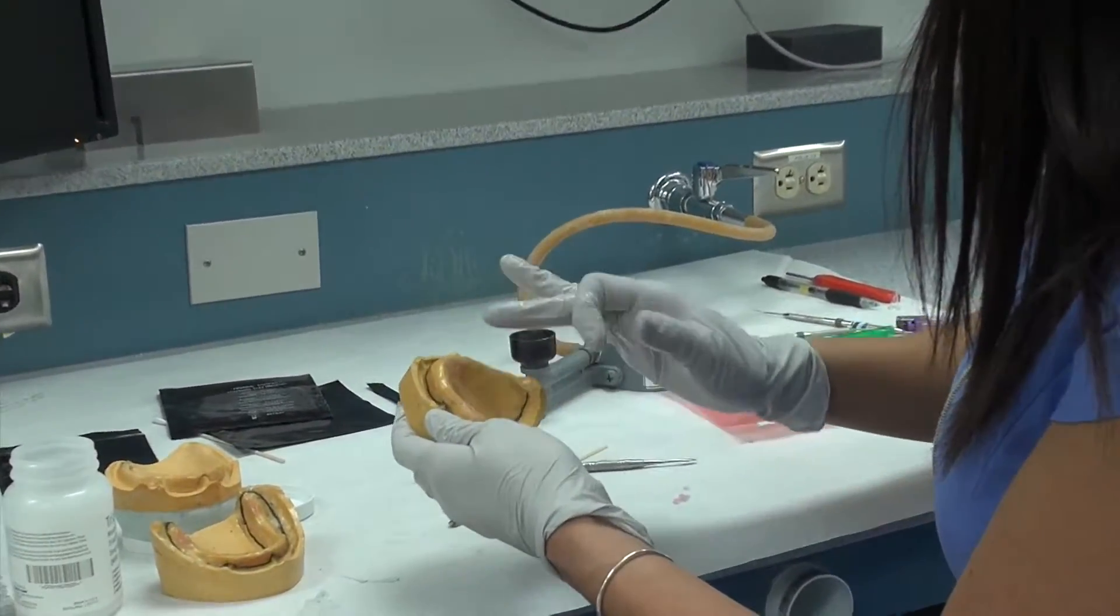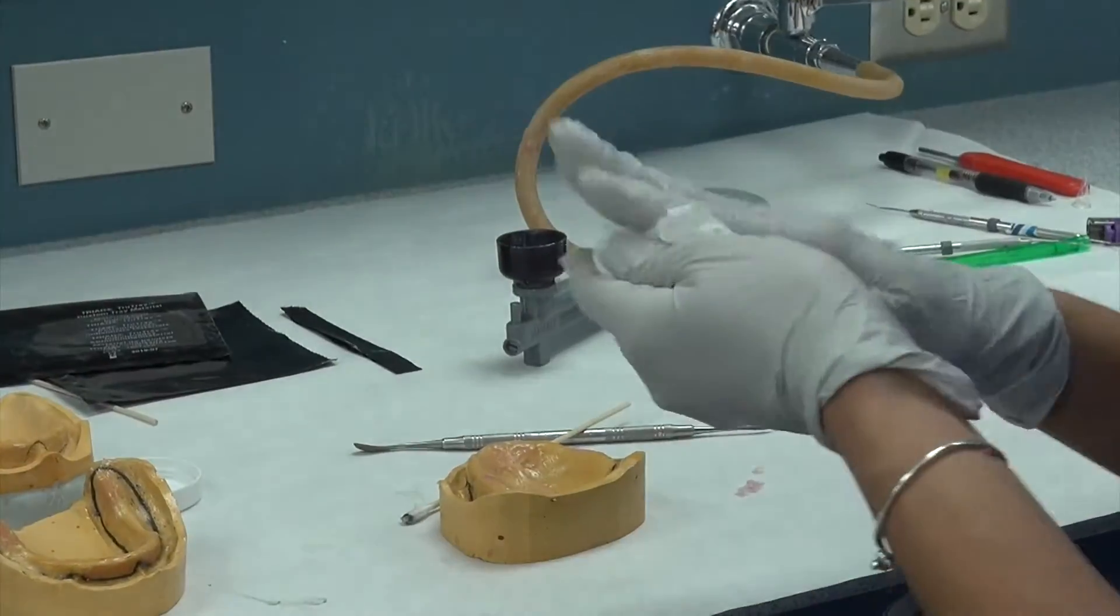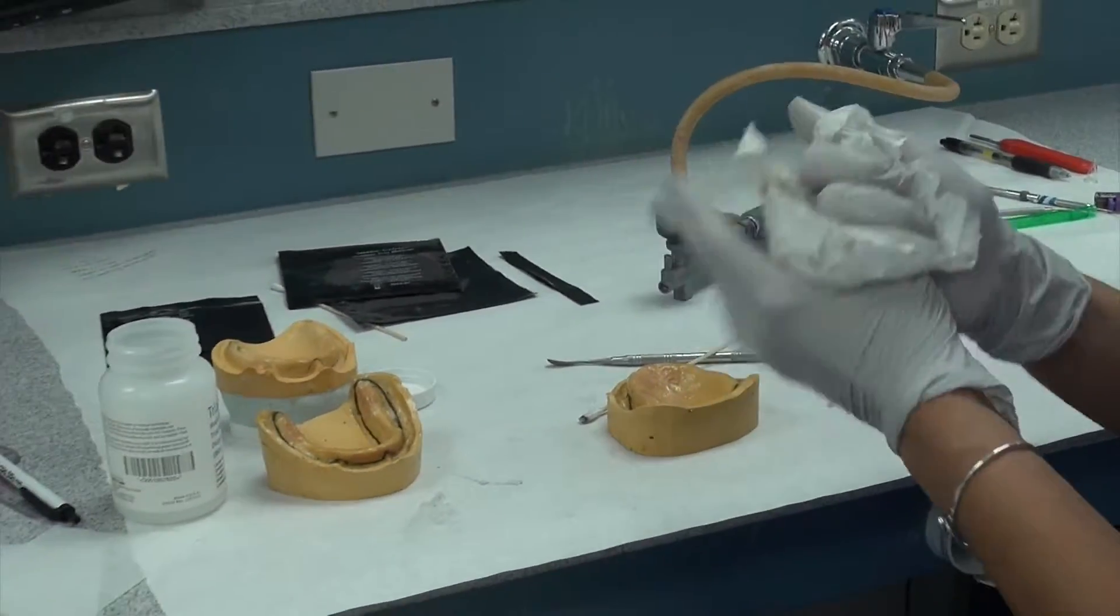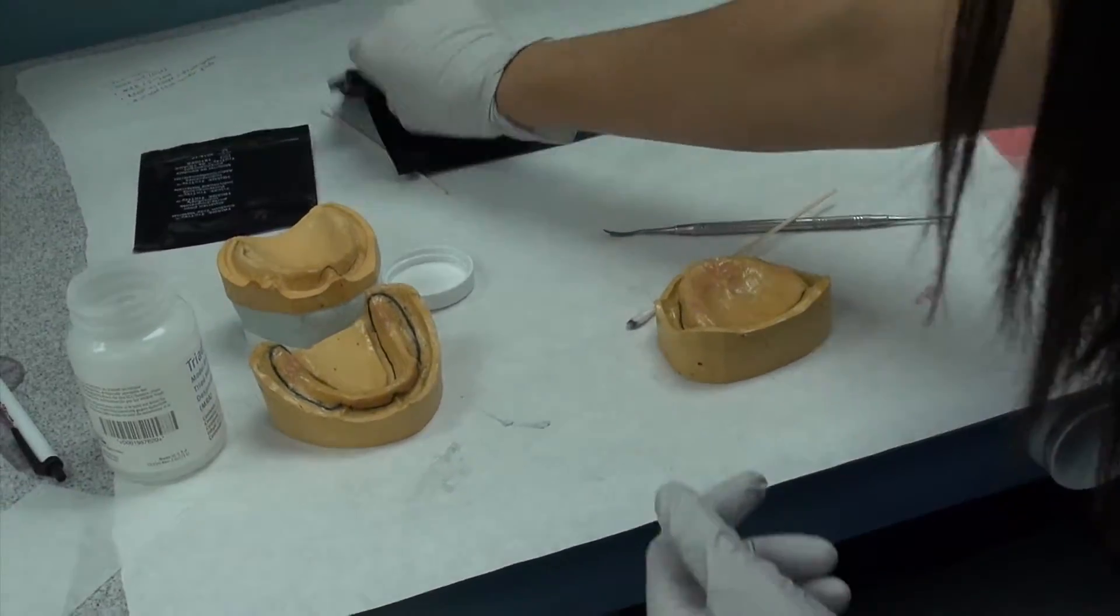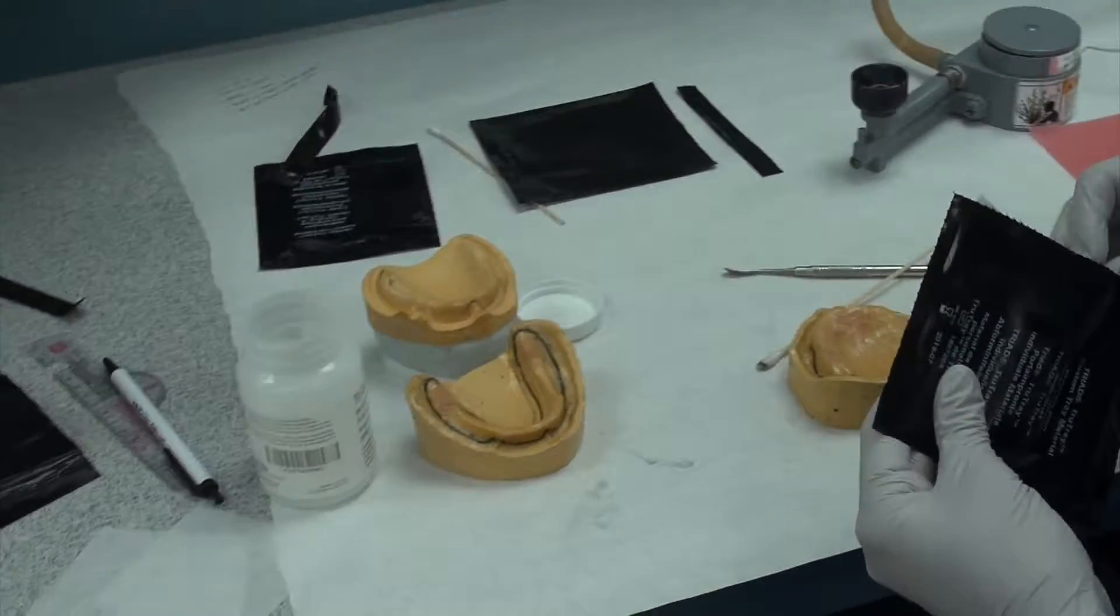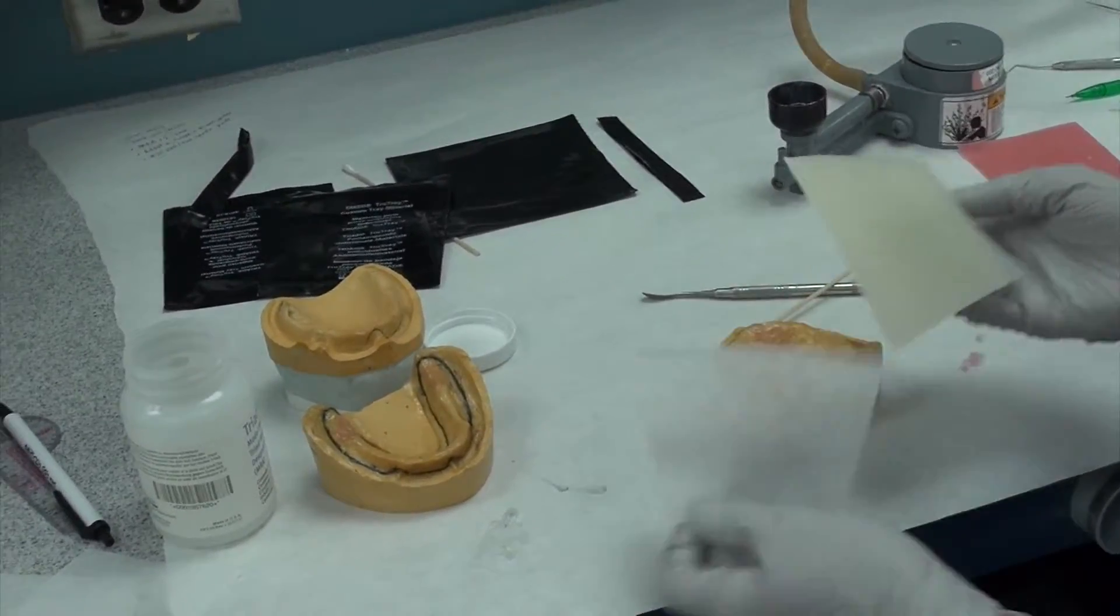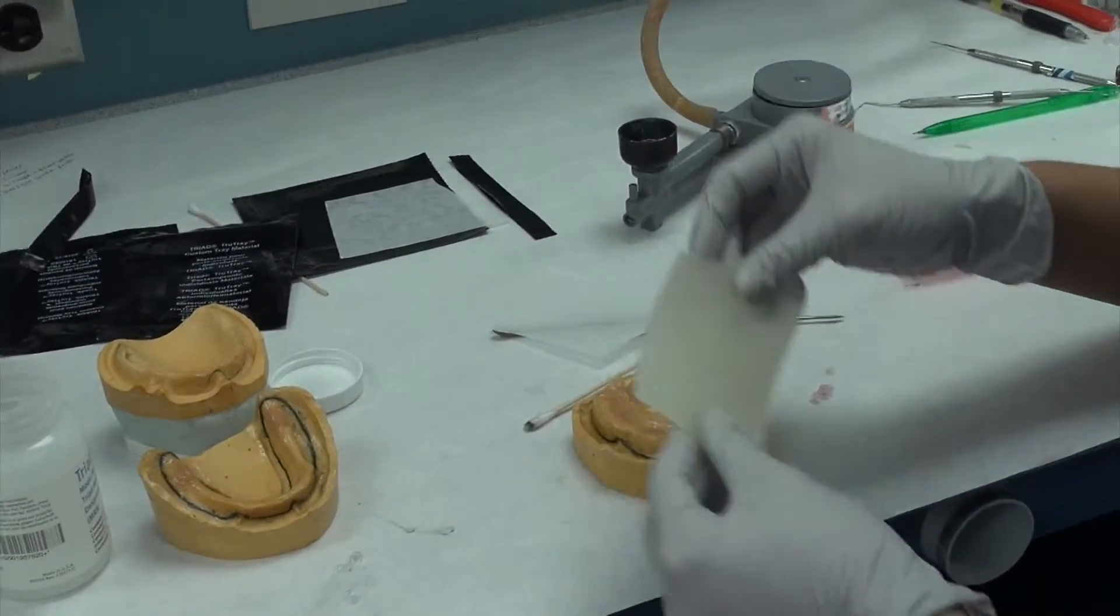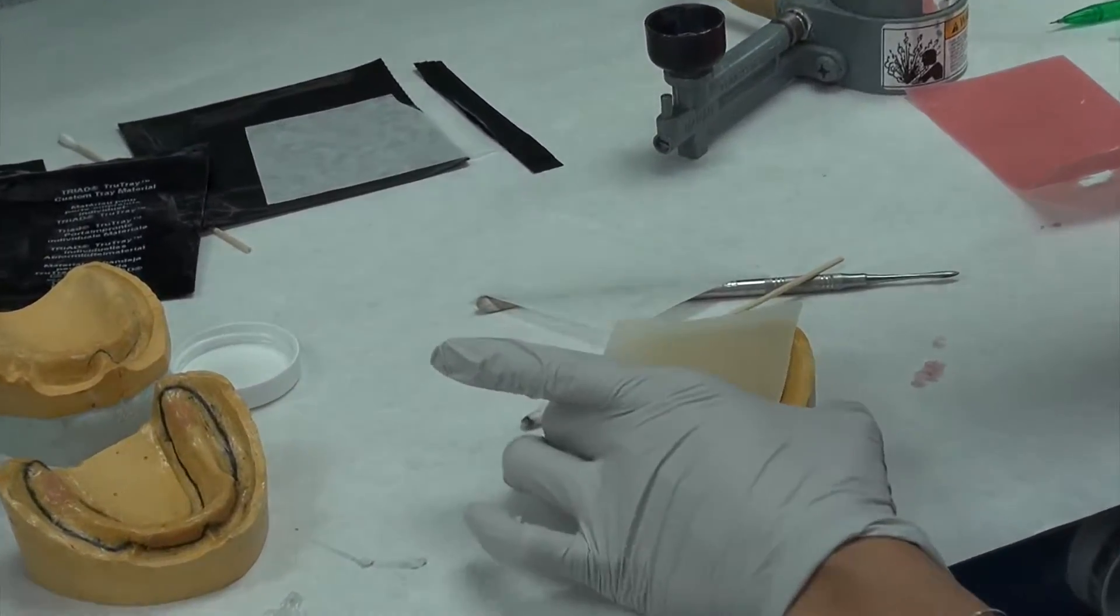So I've wiped off all excess. Hands can kind of get a little goopy after a while, so it's good to have a paper towel so you're not constantly having to change your gloves so many times, because then it will be very difficult to open the bags. When we do the maxillary cast, we're going to place an entire thickness of triad material on there.